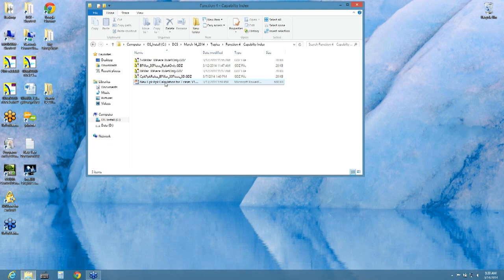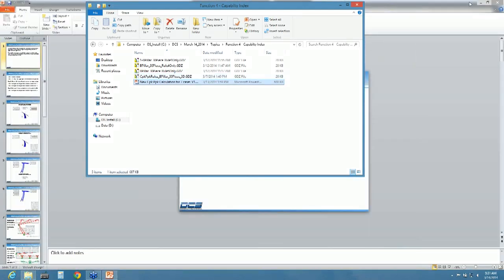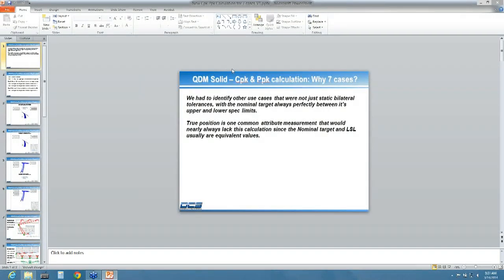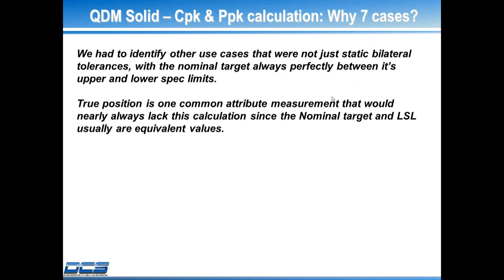Now we're going to talk about the CPK — the seven cases for calculating. What we did was identify several cases that are outside of the normal bilateral tolerance zone. Previously, the software always treated doing this calculation as what we now call case one, where the tolerances are exactly centered around a nominal — like plus or minus one and plus or minus two. Now we can go ahead and set six other cases plus the original to whatever your process actually matches.